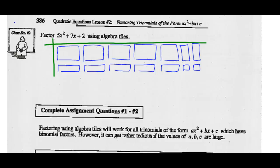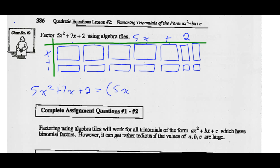I can see that the width is X plus 1, and the length is 5X plus 2. So those should be the factors: 5X squared plus 7X plus 2 should factor as length of 5X plus 2 times the width of X plus 1.